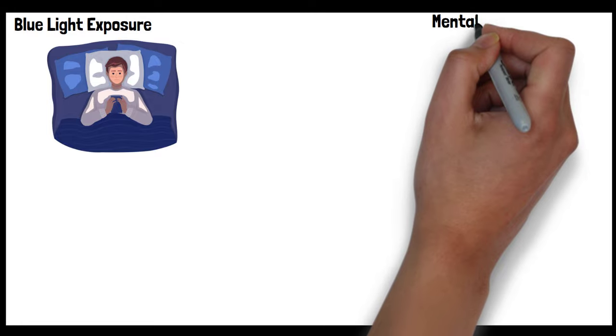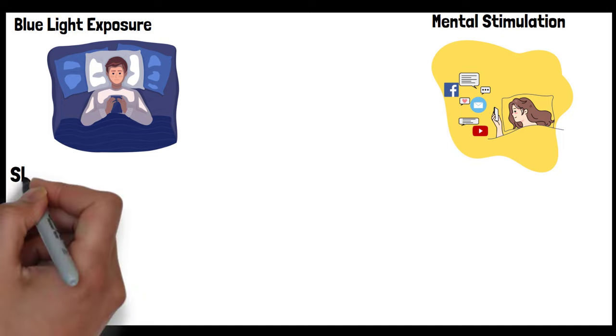Mental stimulation. Engaging with social media, reading news, or playing games can stimulate your mind, making it difficult to wind down and fall asleep. Reading emails or encountering stressful or emotional content can trigger a stress response, releasing cortisol, a hormone that further impedes sleep.